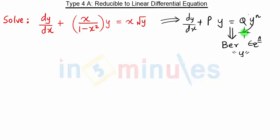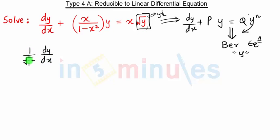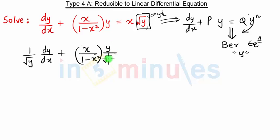Whenever our equation is Bernoulli's equation, we first divide by y^n. In this case y^n is √y, which can also be represented as y^(1/2). So we divide by √y throughout the equation. We get: (dy/dx)·(1/√y) + x/(1 − x²)·(y/√y) = x.